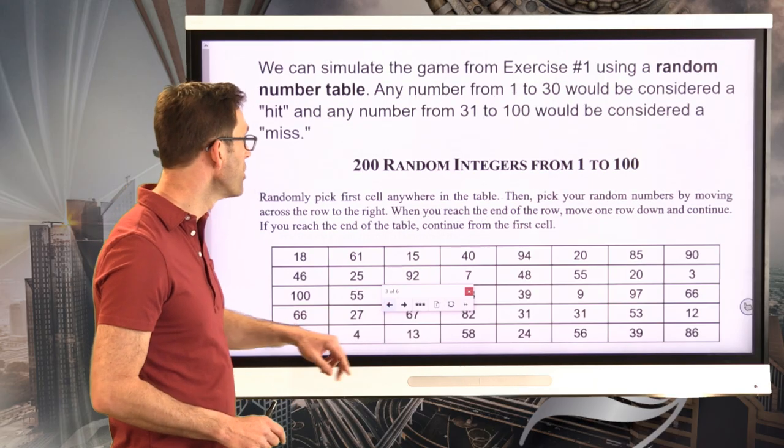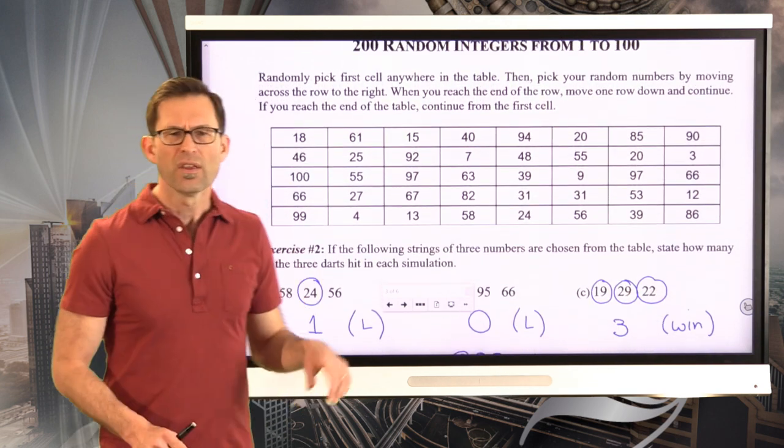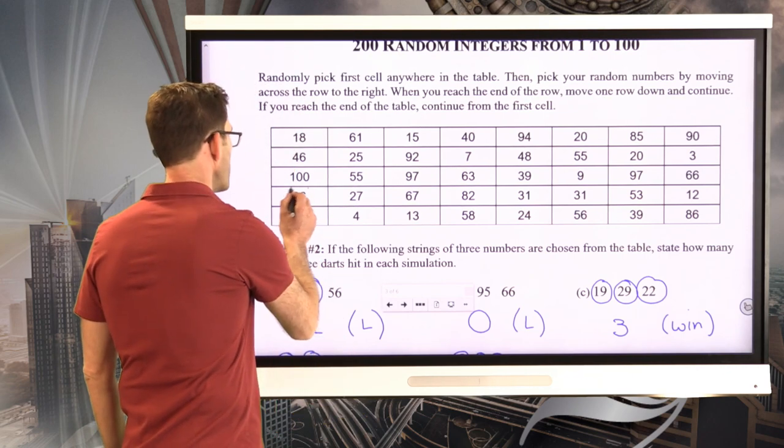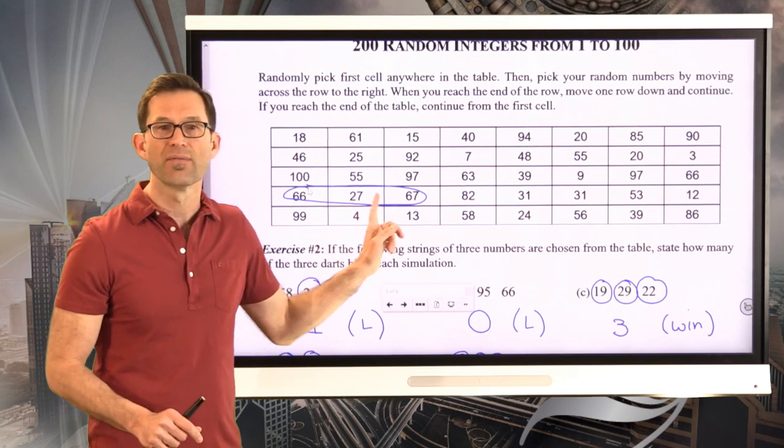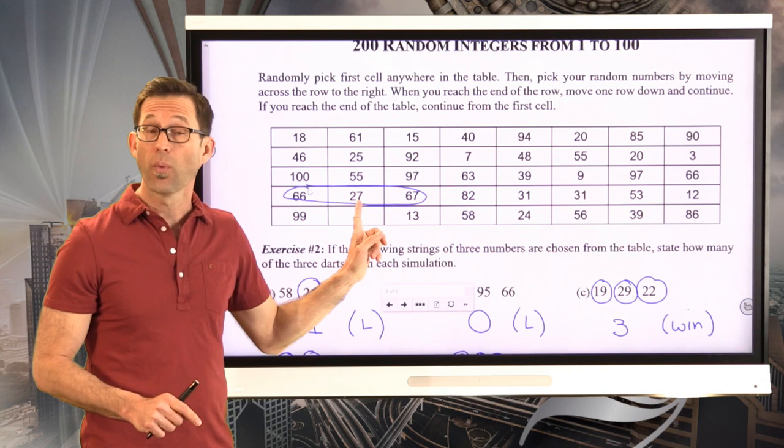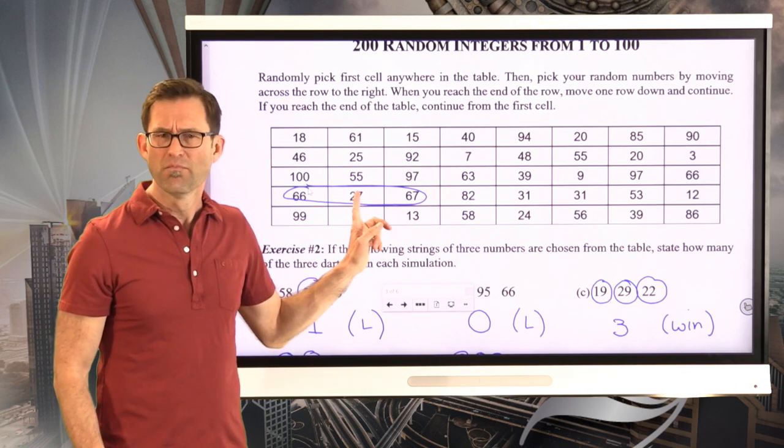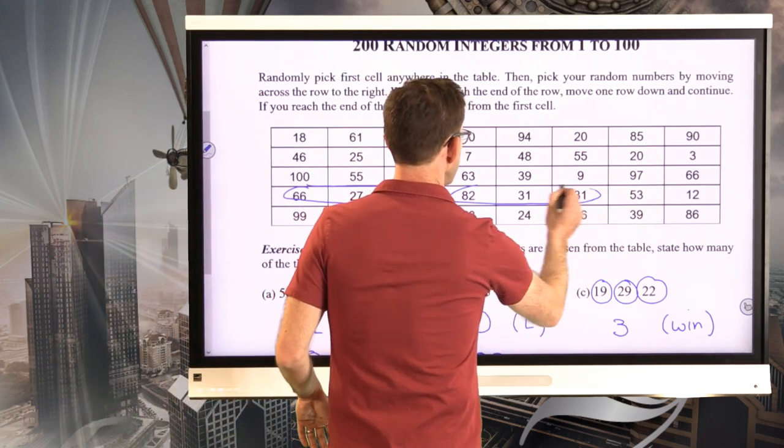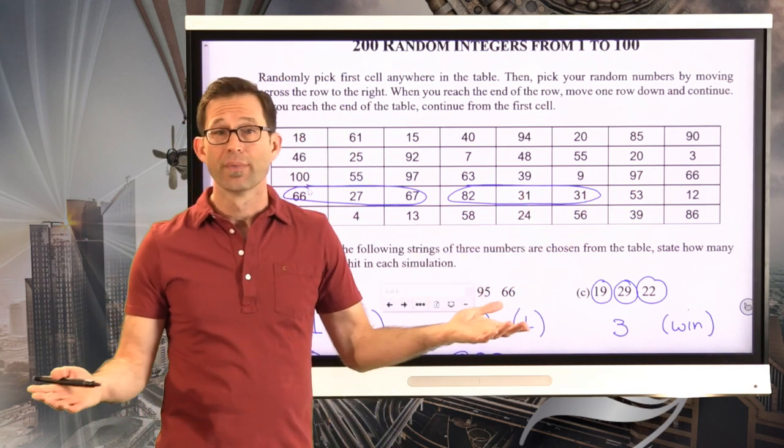Let's just go back for a moment where we have that picture of the table. And here's again what I mean. You may want to start sort of in the first column, but you could just start randomly and be like, I'm going to start here. And this would be my first set of three numbers, 66, 27, 67. And in that set of three, only the 27 would be a hit. So, by the way, I wouldn't win that game. But I would have one hit. Then I would maybe move over and I'd go to these three, 82, 31, 31. None of those.